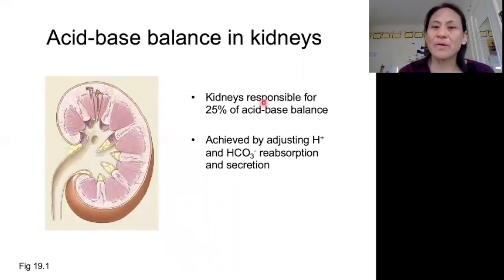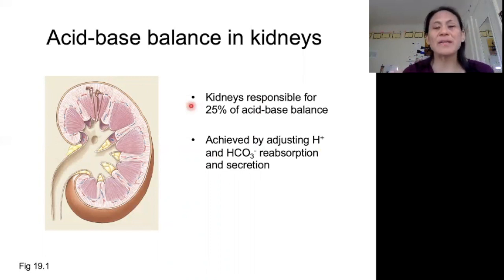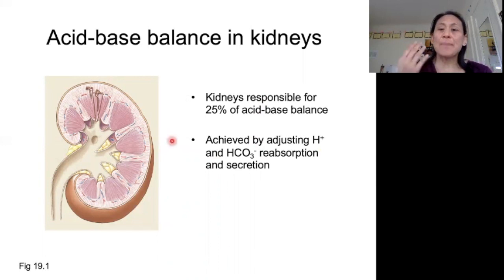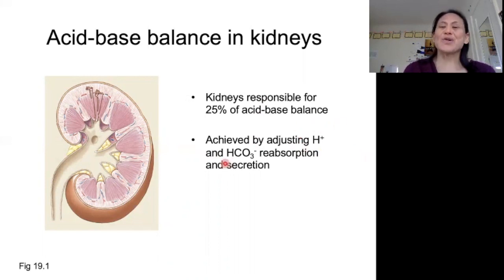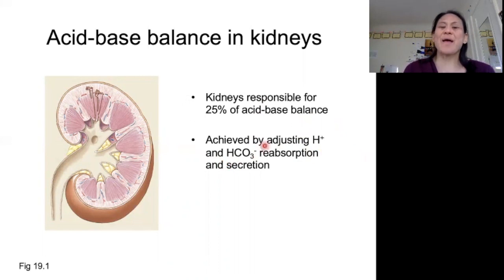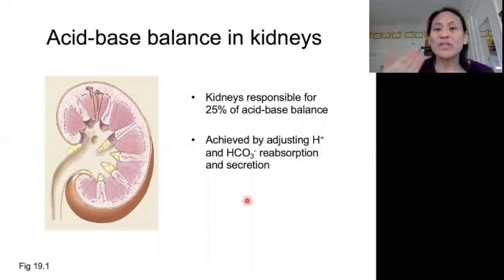The kidneys are responsible for about 25% of the acid-base balance in our bodies. Basically what they do is they either secrete or reabsorb H+, and they either secrete or reabsorb bicarbonate in order to achieve acid-base balance in the body.